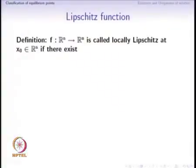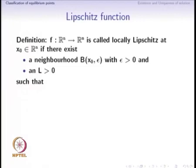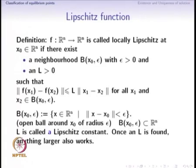It turns out that the key property is called the Lipschitz condition on the function f. This definition is valid for a function f from Rn to Rm — even though in our case f is always from Rn to Rn, we define Lipschitz for f as a map from Rn to Rm. It is said to be locally Lipschitz at a point x0 if there exists a neighborhood B of x0 of radius epsilon — we will see a precise definition of a neighborhood very soon — with epsilon greater than 0 and a constant L greater than 0, such that a certain inequality is satisfied.